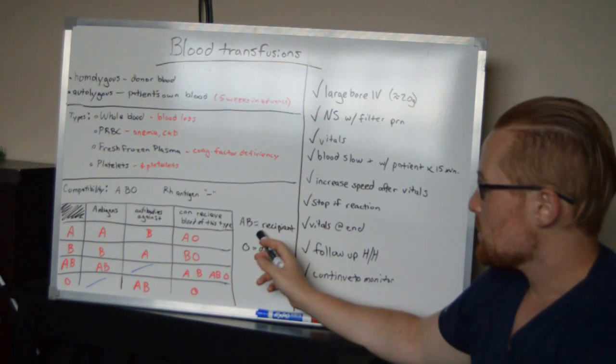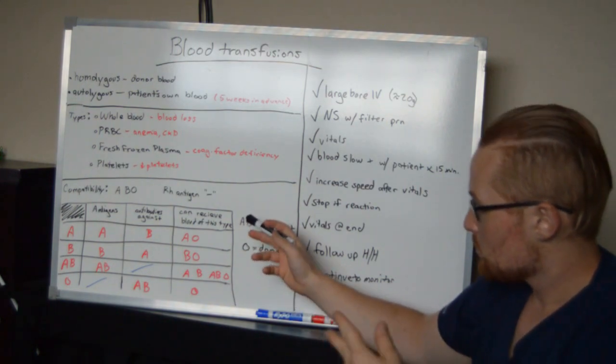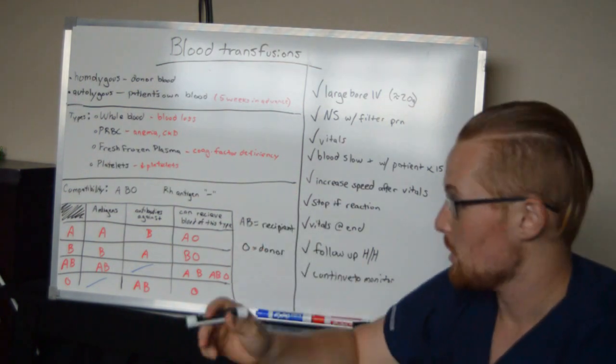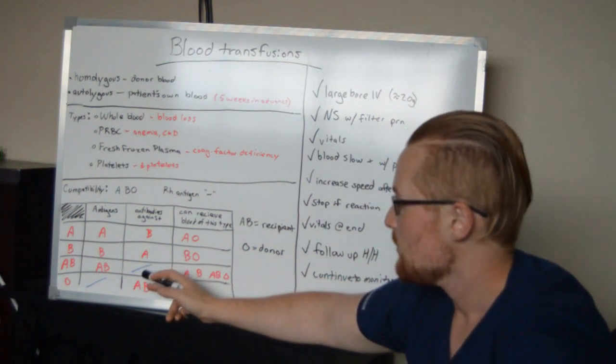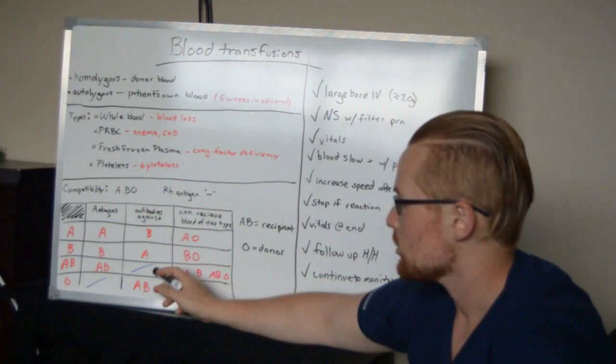So what this means is AB recipients can receive any type of blood because they have no antibodies in their blood. So they can receive A, they can receive B, and they can receive O because there's no antibodies.